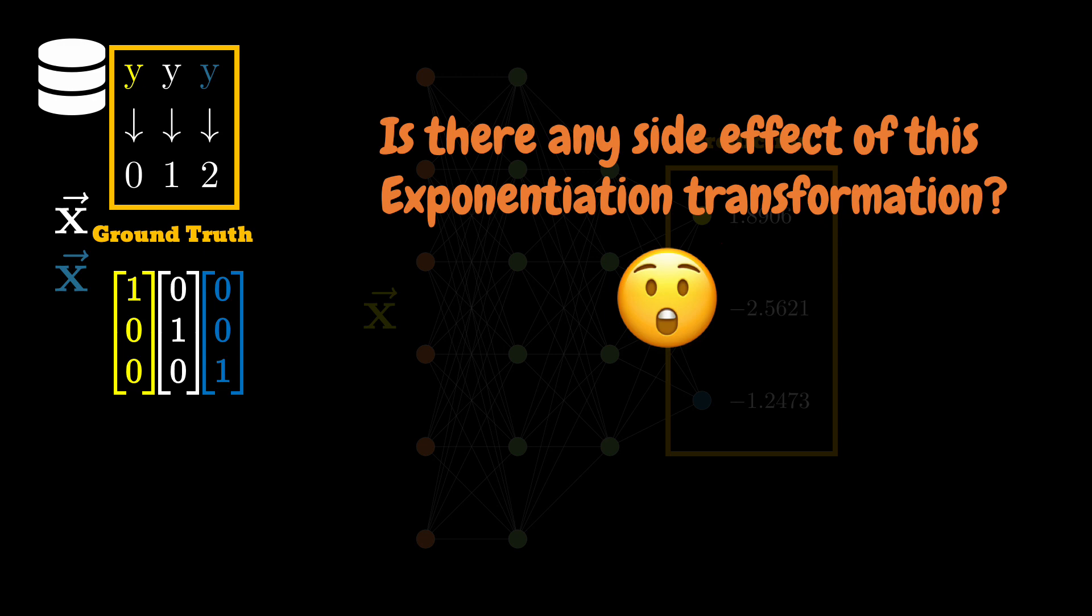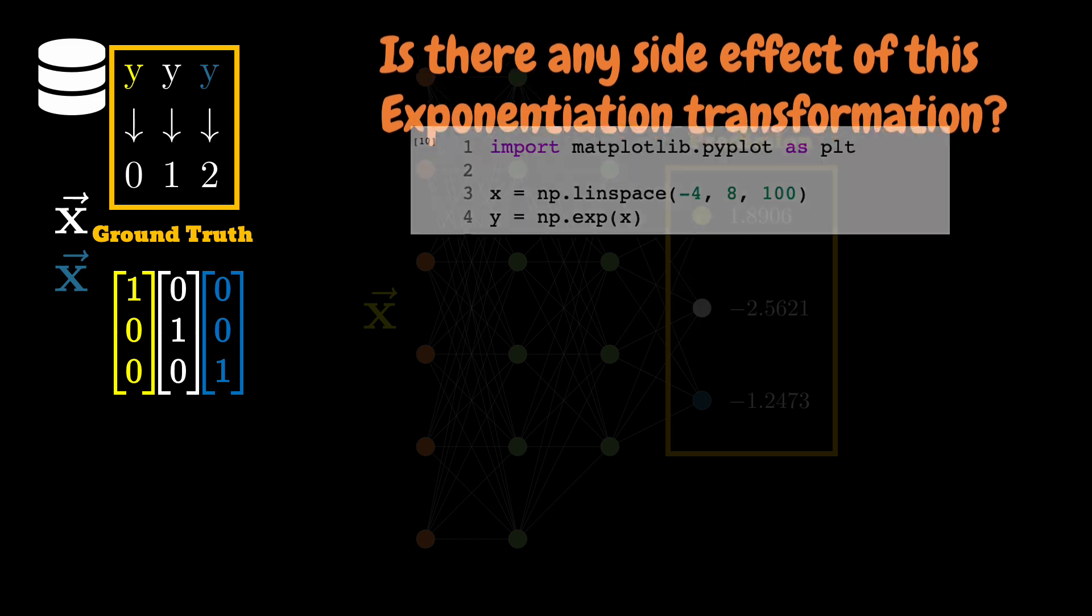And even more importantly, is there any artifact or side effect of this transformation of our logits to the so-called probabilities using the exponential transformation? And let me kill the surprise for you by informing you that there is indeed a consequence that you should be aware of.